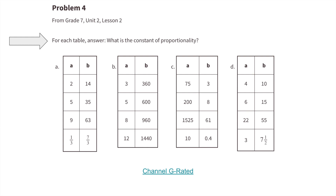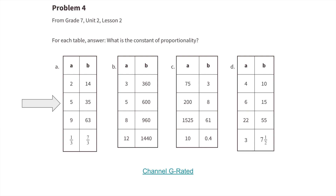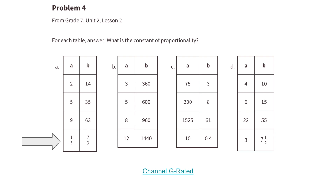For each table, answer: what is the constant of proportionality? Table A: 14 divided by 2 is 7, 35 divided by 5 is 7, 63 divided by 9 is 7, and 7/3 divided by 1/3 is also 7. So the constant of proportionality for table A is 7.